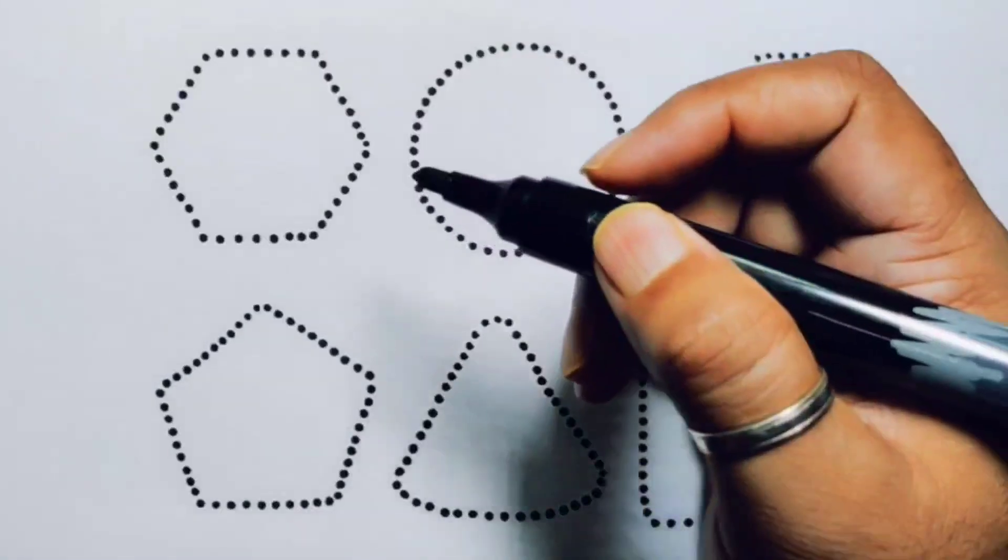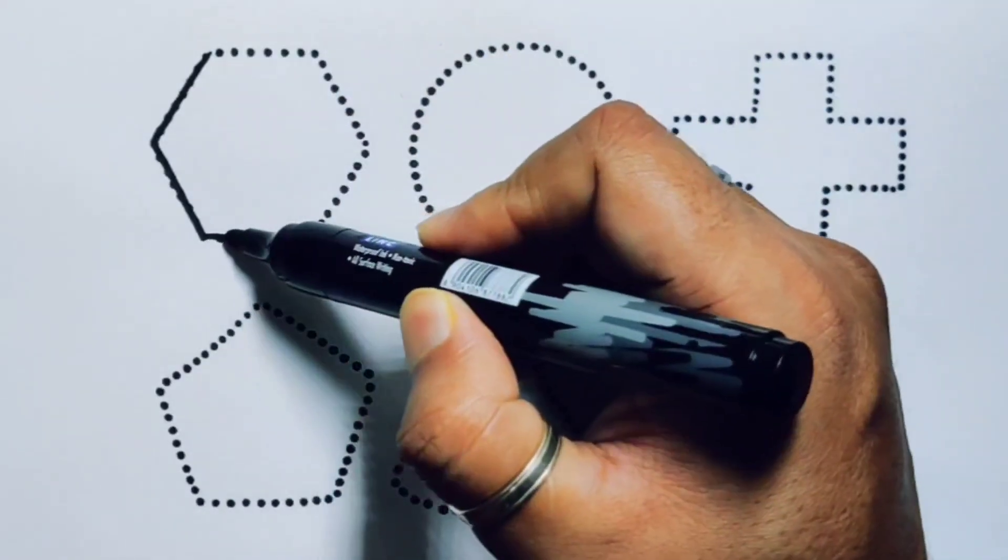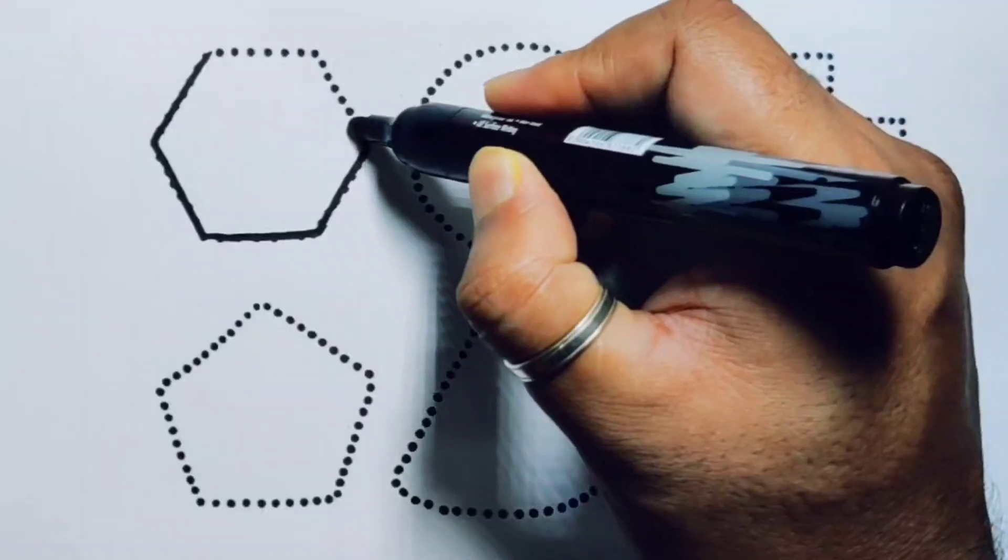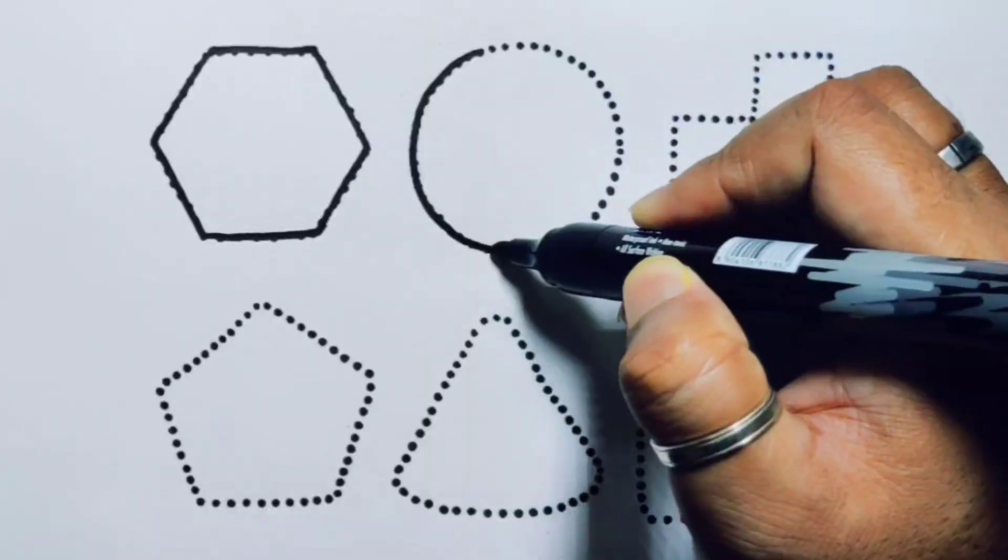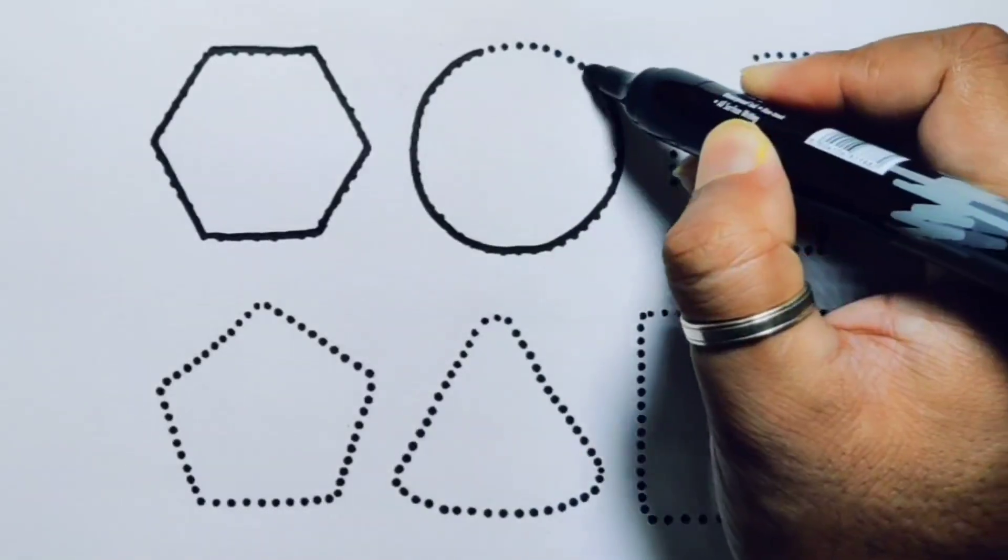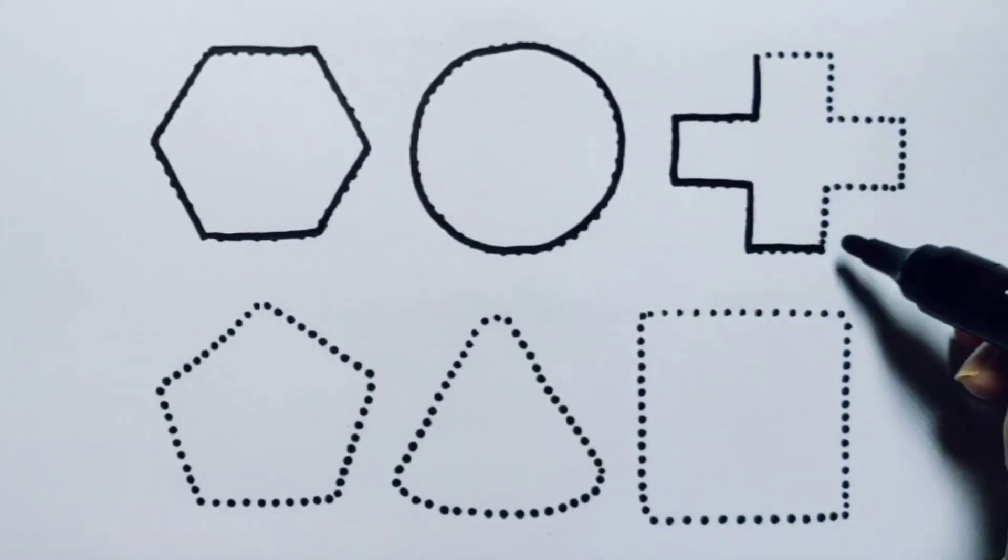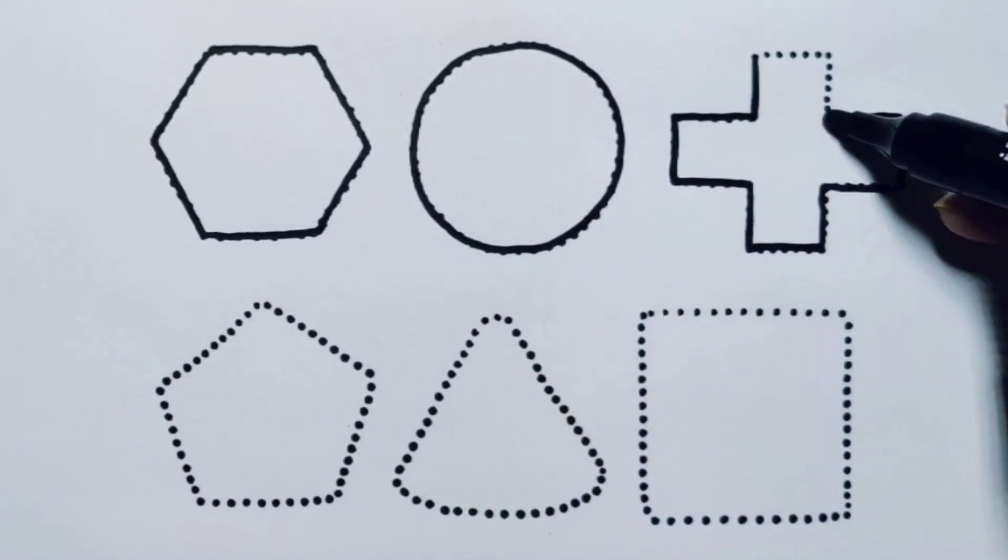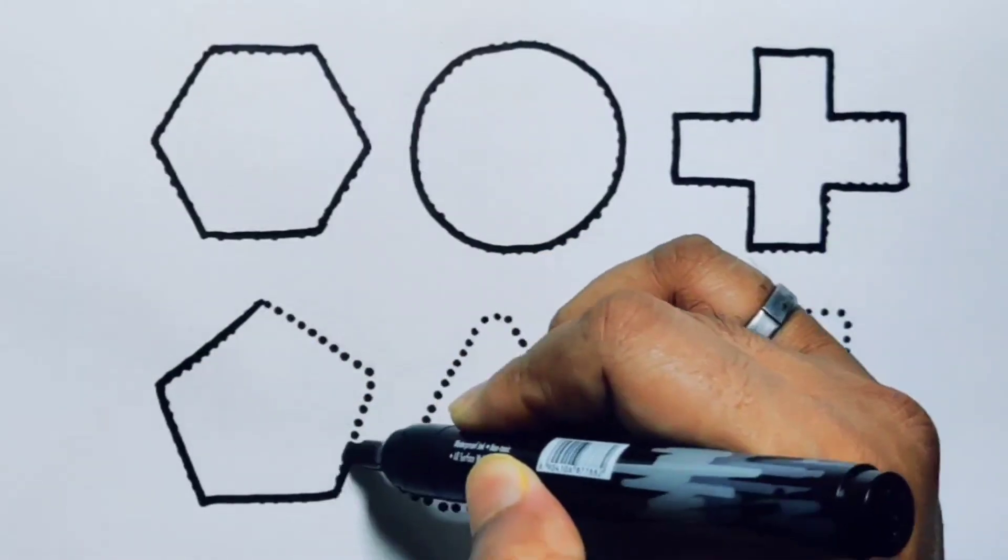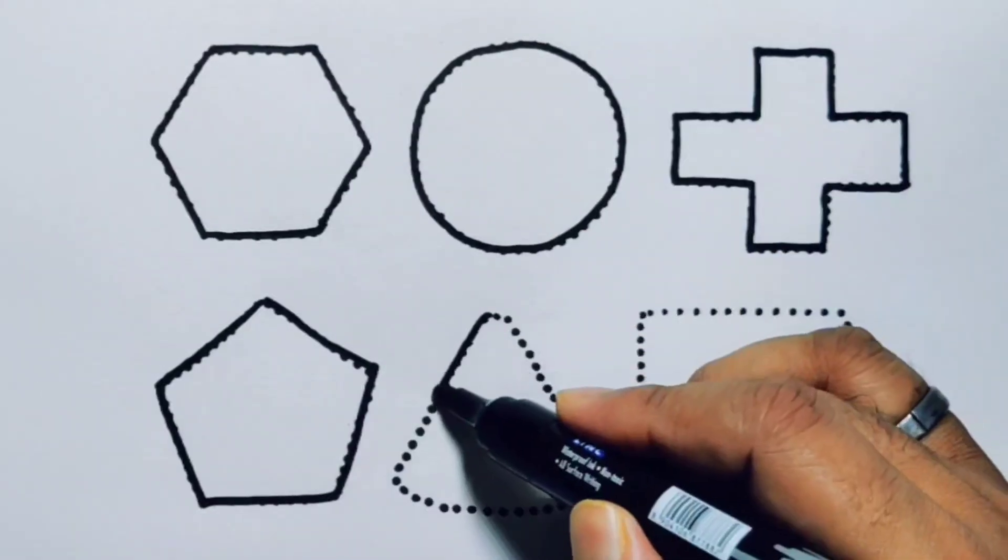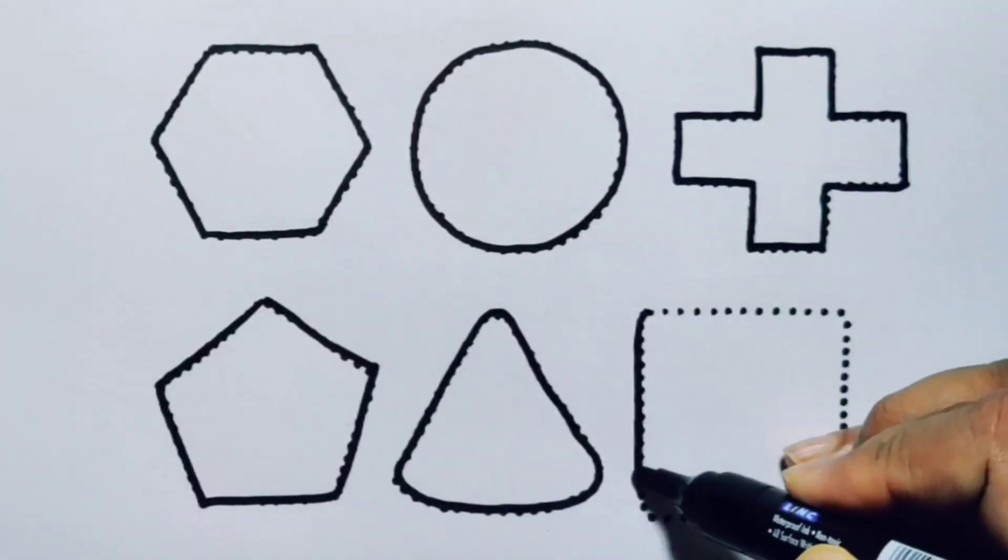First we're going to draw the shapes. Hexagon. Circle. Cross. Pentagon. Triangle. Square.